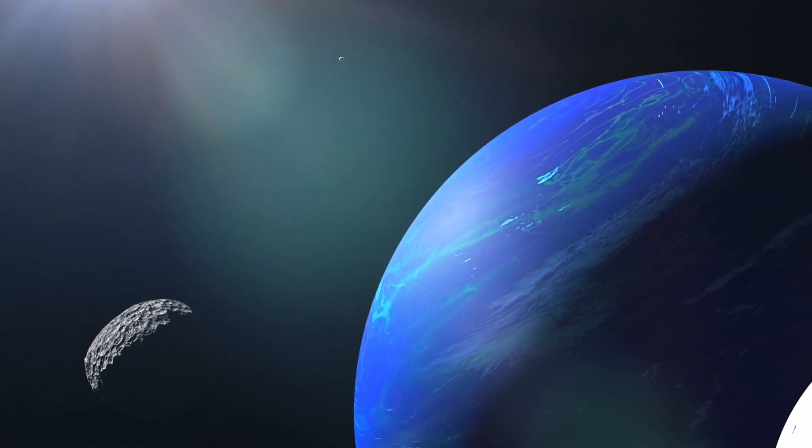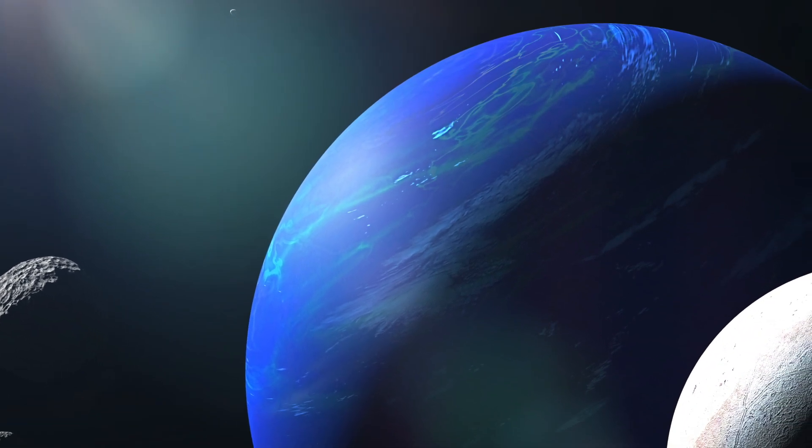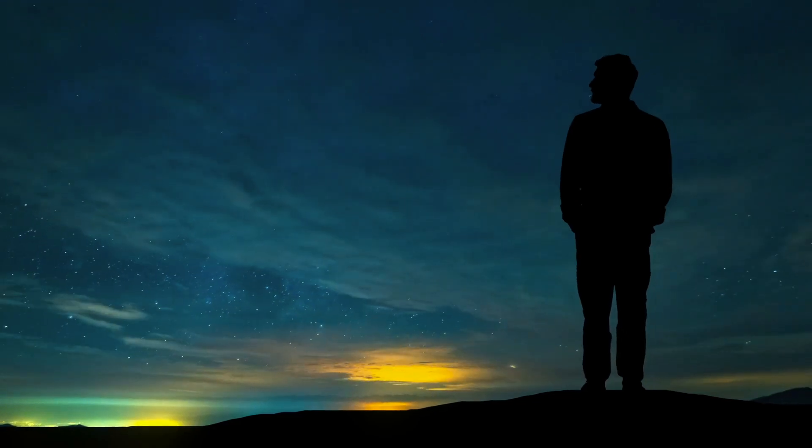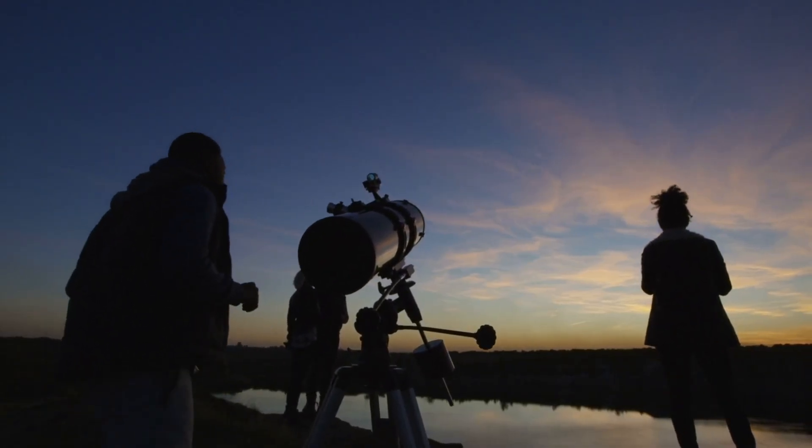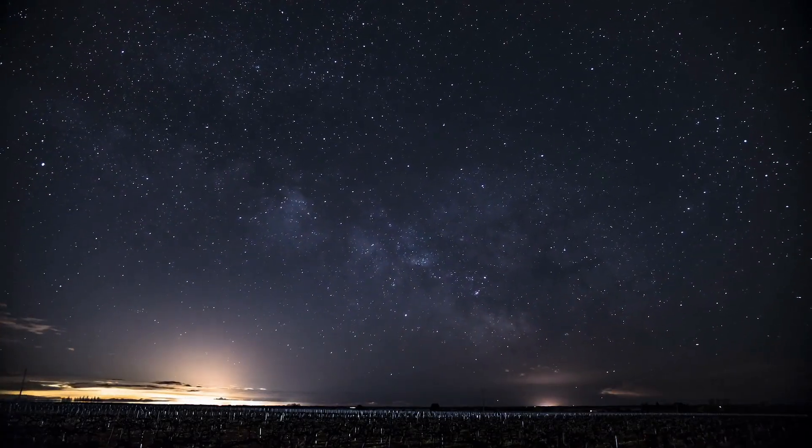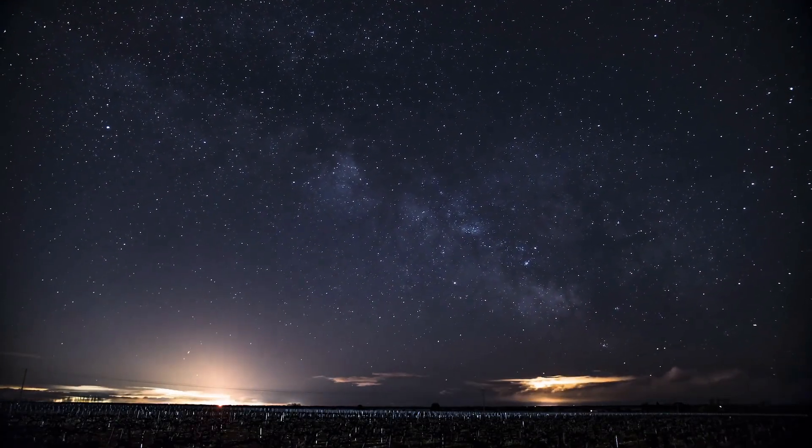Another characteristic of Neptune is that the ice giant is the only celestial body in our solar system that we cannot see with the naked eye from Earth. This is only possible with the help of special astronomical telescopes. The chances of seeing Neptune itself are best on clear evenings in autumn.